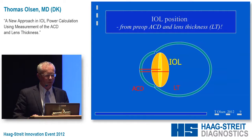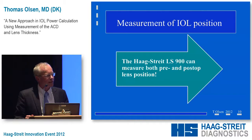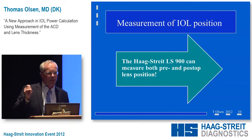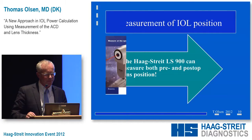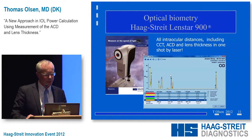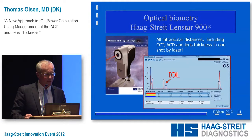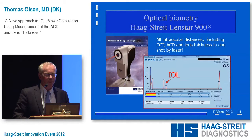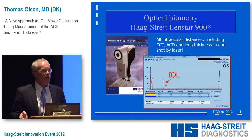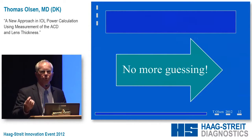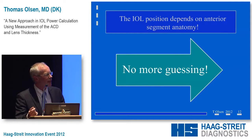If we measure the anterior segment structure — that is the anterior chamber depth and the lens thickness — we can come up with a very nice correlation of the final position of the implant in that eye. With the Haag-Streit LenStar machine, you can actually measure the IOL position with laser biometry, so it's very accurate. This is first shown for the phakic eye, and lens thickness can be measured with high accuracy. The final position of the implant comes up very nicely, and you can also measure the thickness of the IOL and from that derive the IOL power.